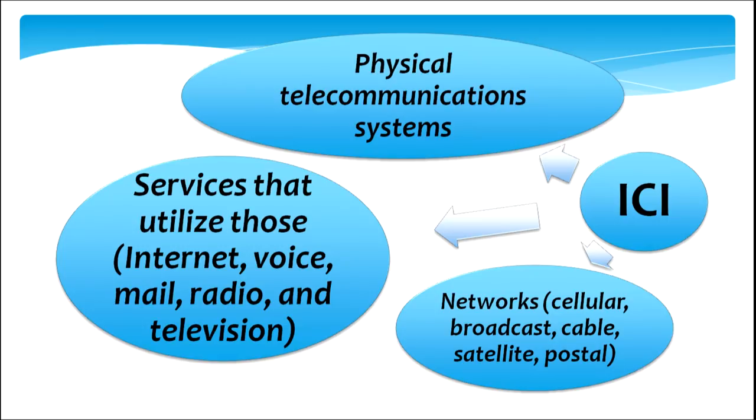When we say ICI — that is, information communication infrastructure — it consists of physical telecommunication systems, the hardware that we see. It also involves services that make use of internet, voicemail, and radio and television. It includes networks such as cellular networks, broadcasting networks, cable, satellite, and postal. In fact, right now all the learners are making use of ICI to see this lesson.